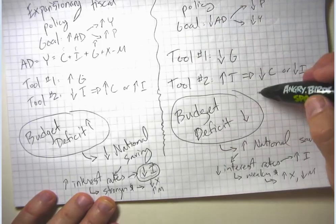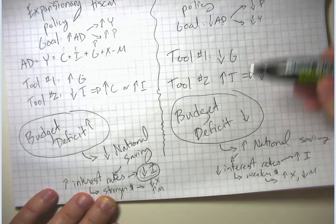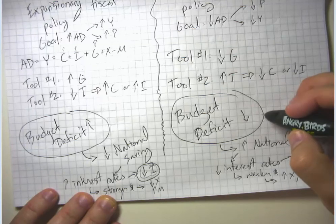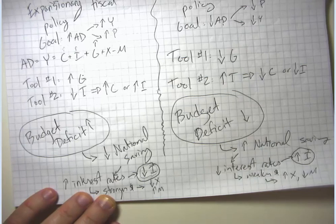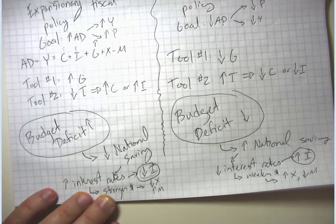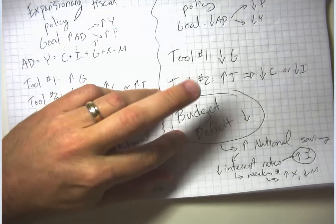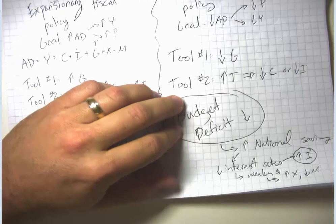Cutting back on the deficit causes aggregate demand to fall, so it causes short-run economic growth to be lower, but long-run economic growth to be higher. What is appropriate really depends on the circumstances. If your bigger concern is short-run economic growth, then a higher budget deficit looks appealing. If you're more worried about long-run economic growth, then a smaller budget deficit looks appealing.